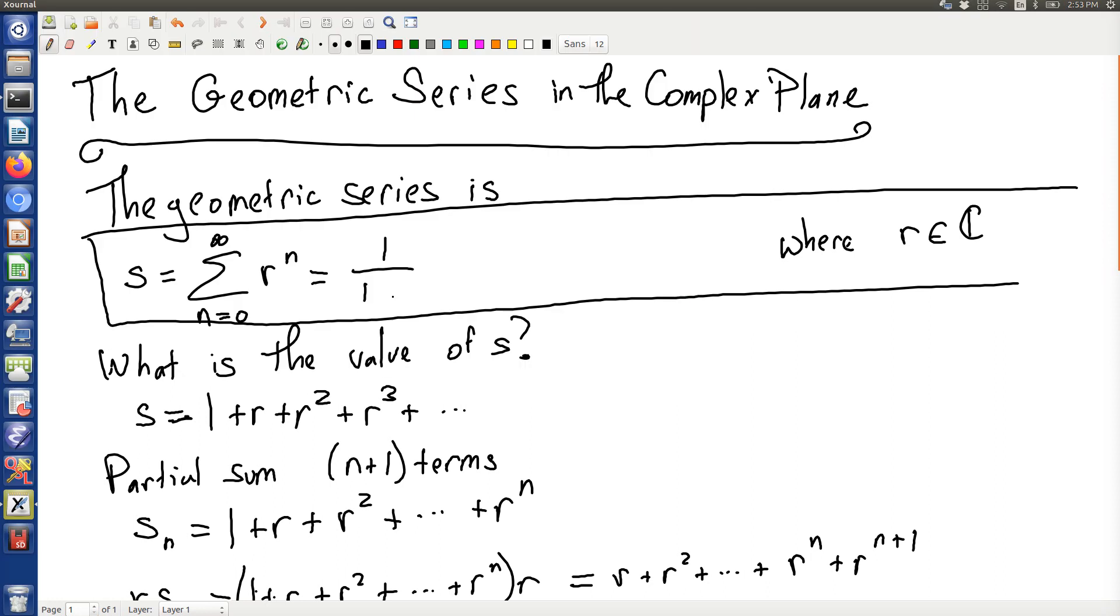This is equal to 1 over 1 minus r if absolute value of r is less than 1. Otherwise it is not finite.